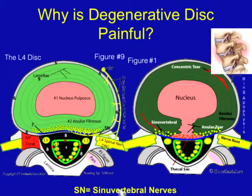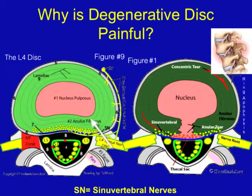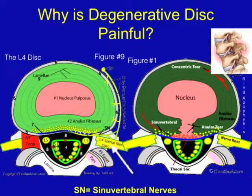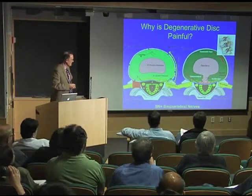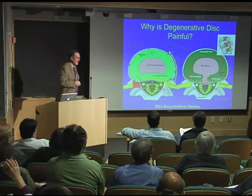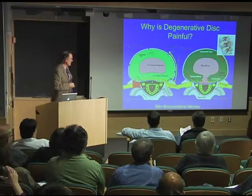Why do we have pain? We have these little fibers that are along the annulus fibrosis. Here's the nucleus, the annulus, and these nociceptive fibers coming off a little nerve root are pain fibers. And if you have a disc that degenerates and you have these little fissures, that can cause pain by irritating these small nerve roots.